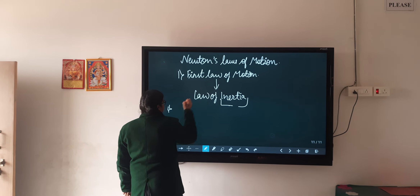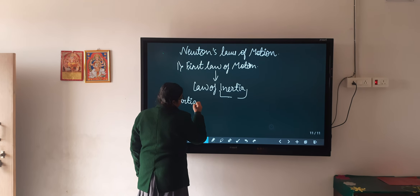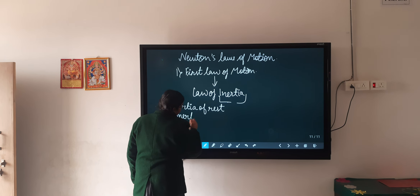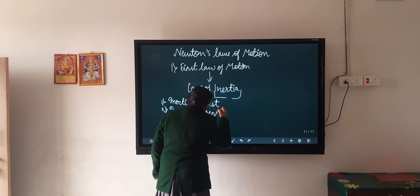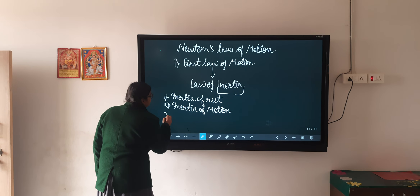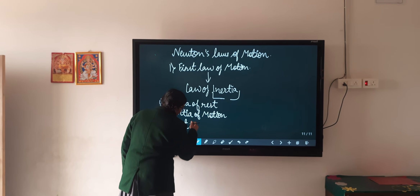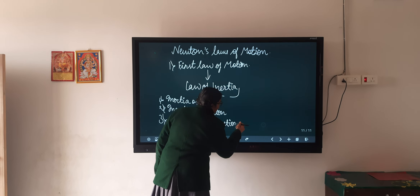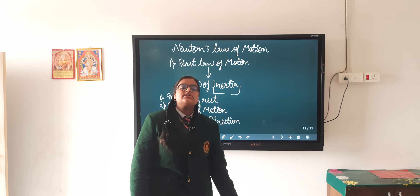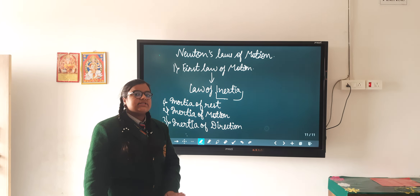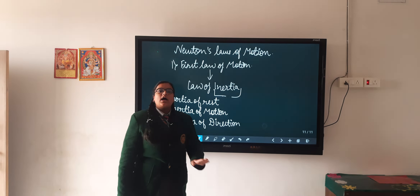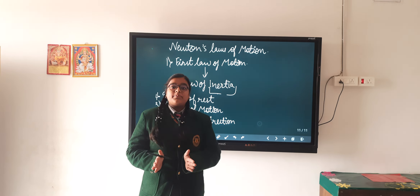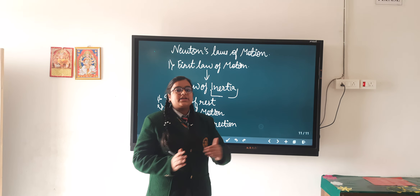The first one is inertia of rest. The second one is inertia of motion. And the third one is inertia of direction. Inertia of rest means if a body is at rest, it will remain at rest unless an external force acts on it. Inertia of direction means the body will continue in the same direction until the direction is changed by an external force.